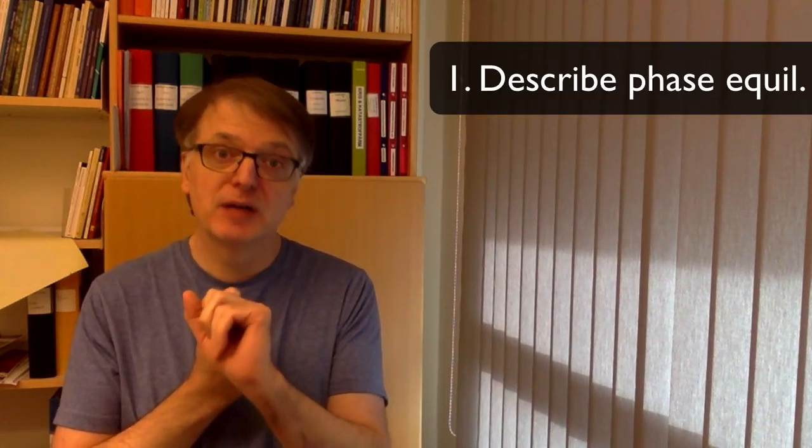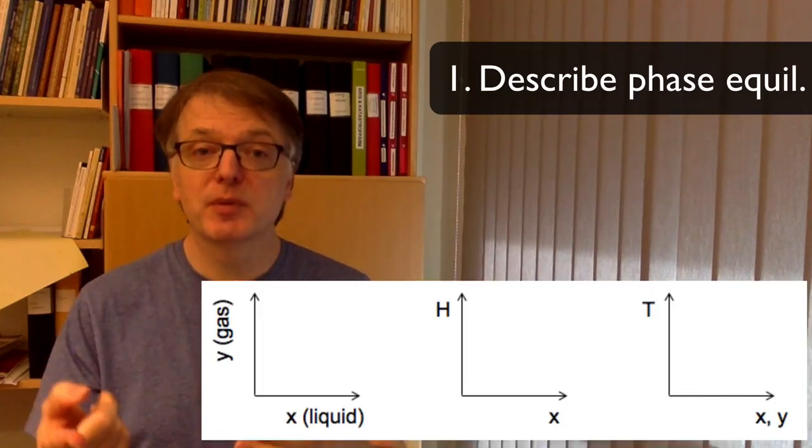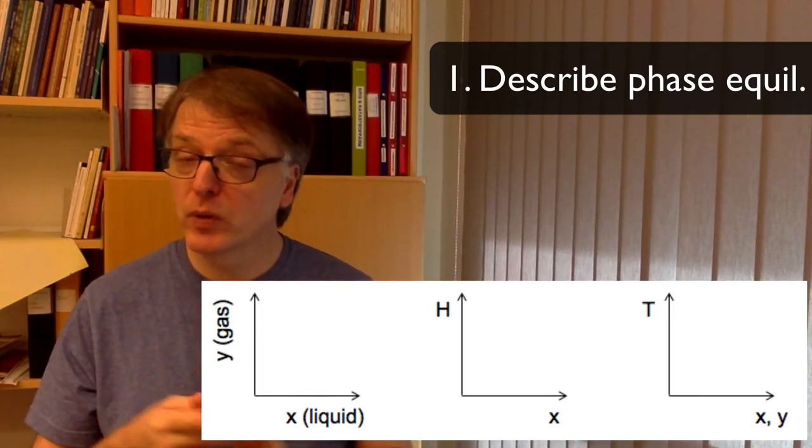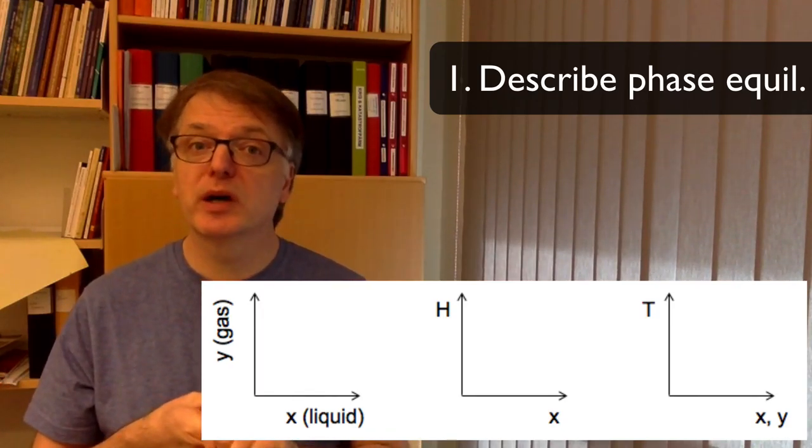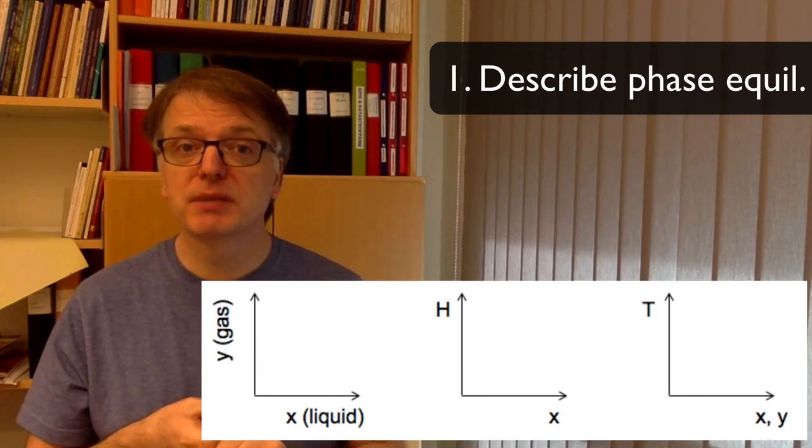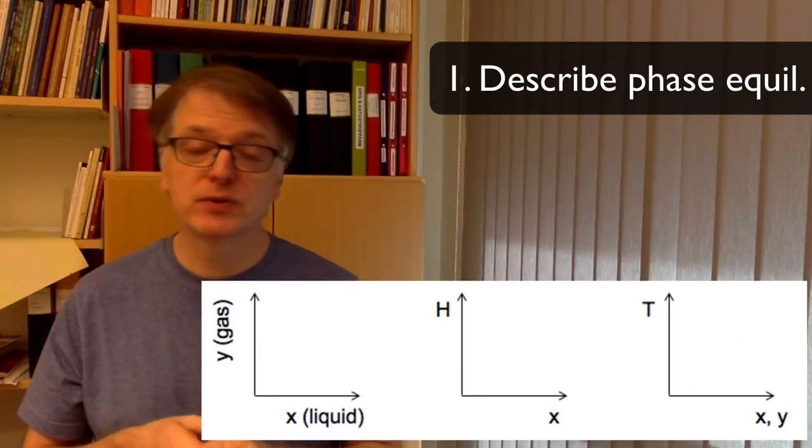In order to do calculations for distillation, we will need three different things. We will need to be able to describe the phase equilibrium, for example making boiling point diagrams. But more importantly, we will need to make an XY diagram because we will be using McCabe-Thiele's graphical method to solve these problems.